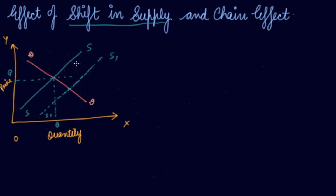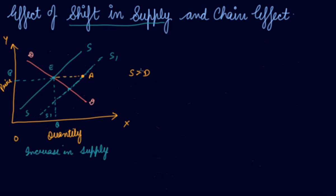Now let us understand the chain effect due to a shift in the supply curve. There is a rightward shift — this is your graph, quantity and price. Your initial demand, your initial supply, your equilibrium point, equilibrium quantity, and equilibrium price. There is an increase in supply, which means a rightward shift of the supply curve. Now your supply is greater than your demand, and people are not demanding your product while you have a lot of stock to sell.